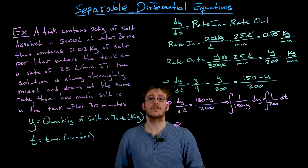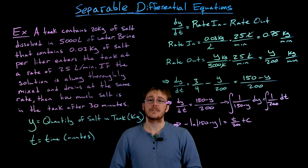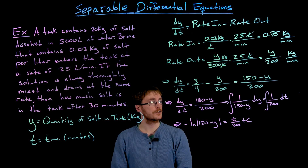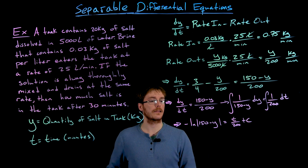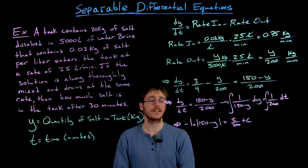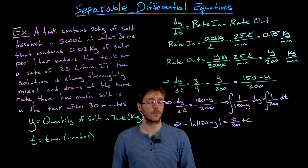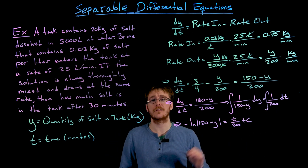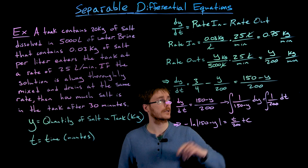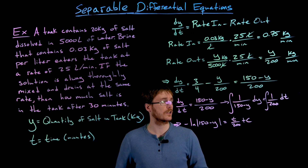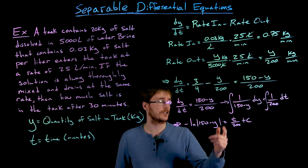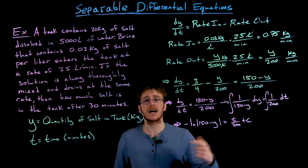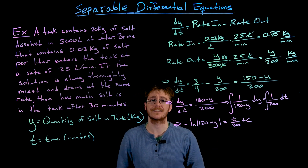Integrating both sides, we use a u-substitution on the left-hand side to find the antiderivative is negative the natural log of the absolute value of (150 minus y). On the right-hand side, integrating the constant 1/200 with respect to t gives (1/200)t plus a constant c.